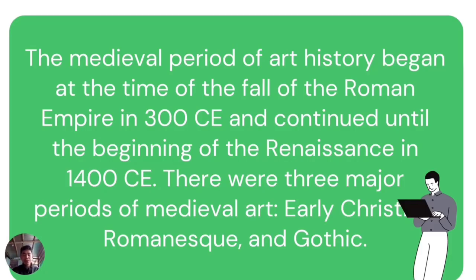The medieval period of art history begins at the time of the fall of the Roman Empire in 300 CE and continues until the beginning of the renaissance in the 14th century CE. There were three major periods of medieval art: early Christian, Romanesque, and Gothic.